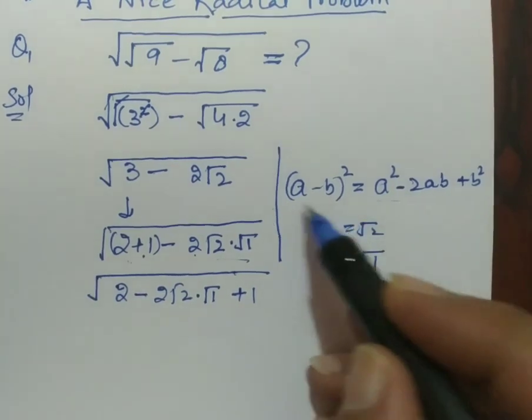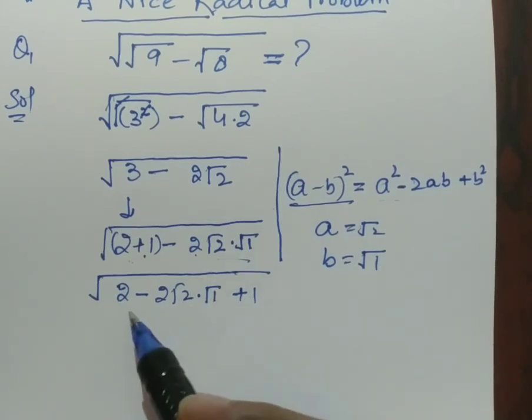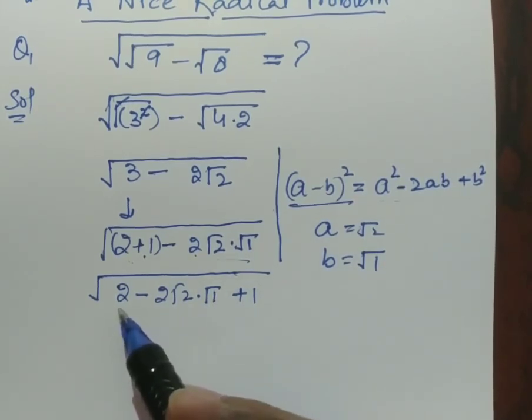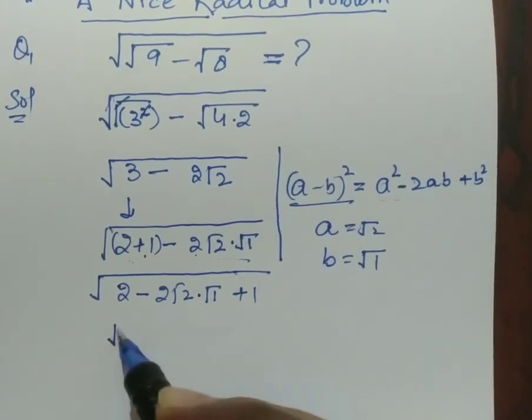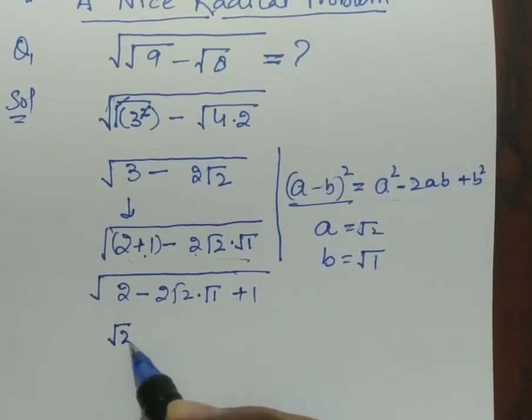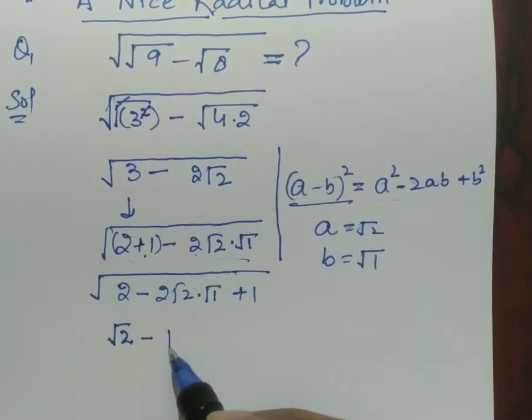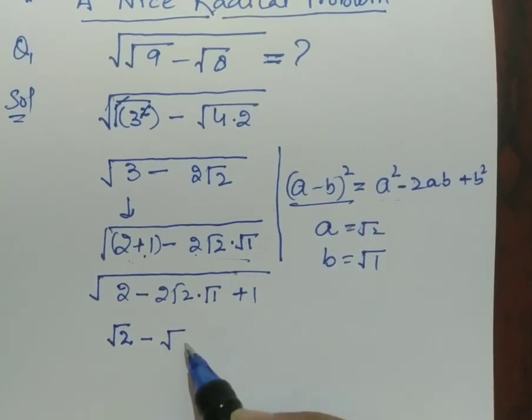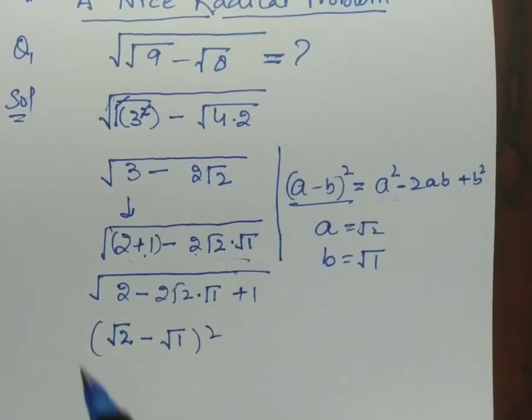If I am going to provide the square, then I have to write this 2 under root. So it is square root of 2 minus square root of 1, then it's whole square over whole root, under whole root.